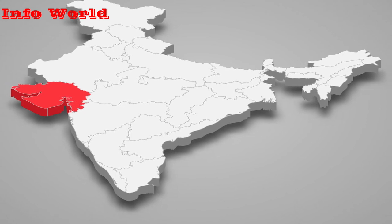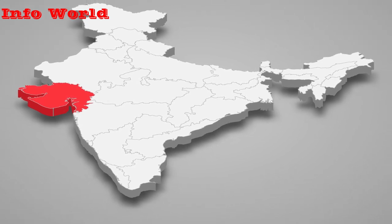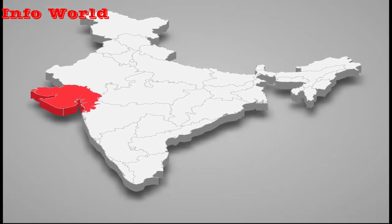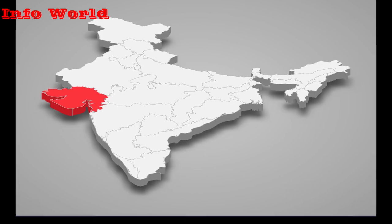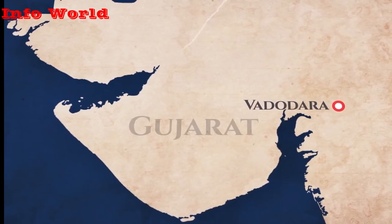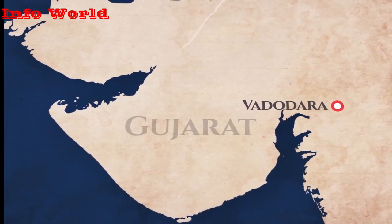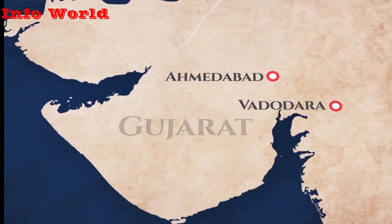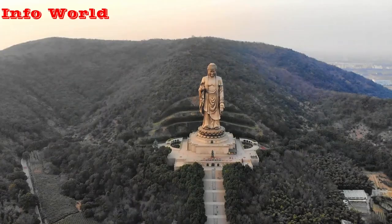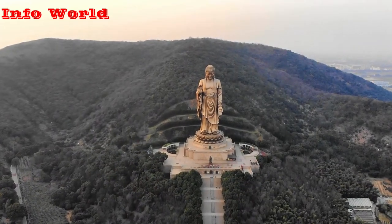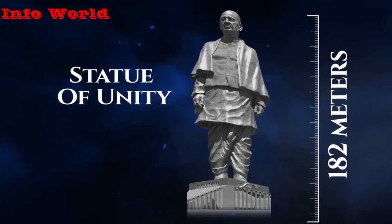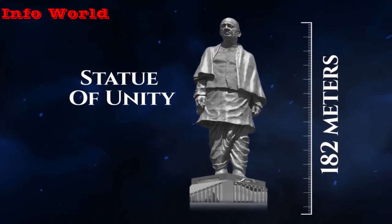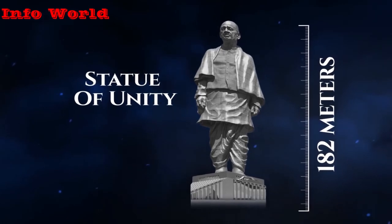The world's tallest statue is situated in the Narmada district of Gujarat state in the Republic of India. The district is bordered on the north by Vadodara and Kota Udaipur districts. After the construction of the Spring Temple Buddha in China, India surprised the world with a 182-meter-tall statue.